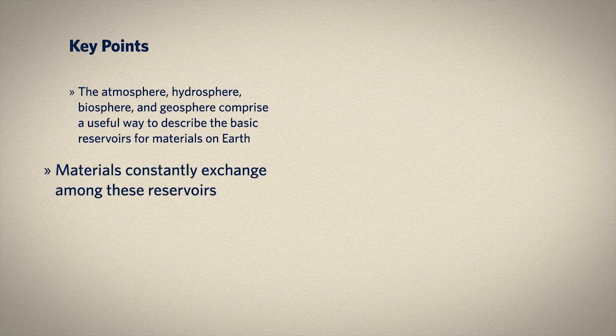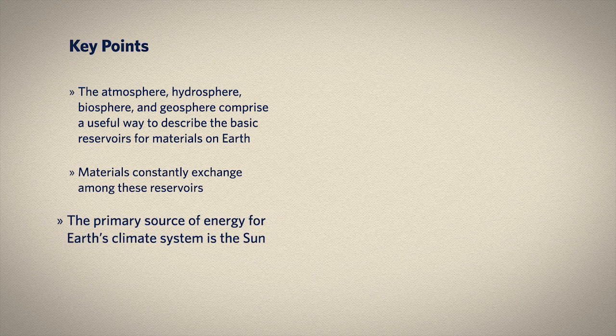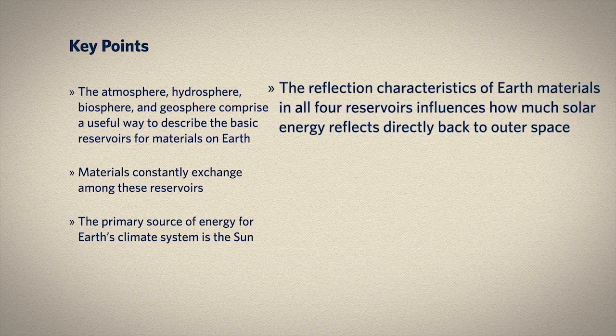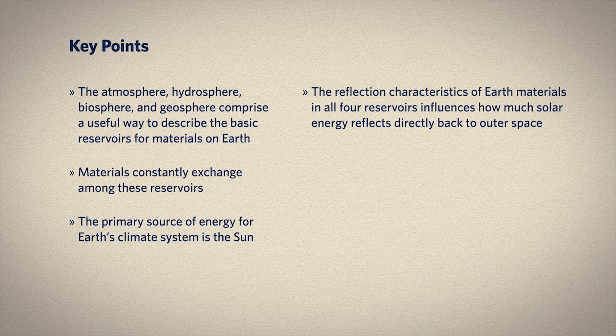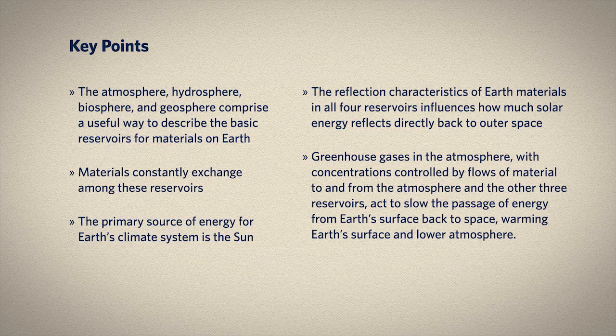We've seen a little bit about each of the four basic reservoirs of materials on Earth. Stuff constantly exchanges among rocks, air, water, and living things. The climate system's energy comes from the sun, and two basic energy-related processes are key: the reflection of incoming solar radiation, sending energy directly back to space, and the greenhouse effect, which keeps Earth's surface and atmosphere warmer than it would be without greenhouse gases. Take out your drawing again—add at least two features or processes you didn't have before. Maybe add the exchange of carbon between the atmosphere and plants, or that ice reflects incoming solar radiation. Find two things to add to your own drawing.